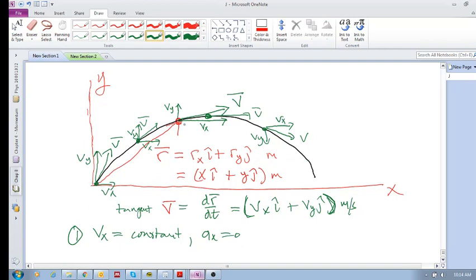So we assume that there's no drag, there's no wind resistance. That's the assumption. There's no wind resistance, and so there's no resistance, there's nothing accelerating positively or negatively in the x direction.